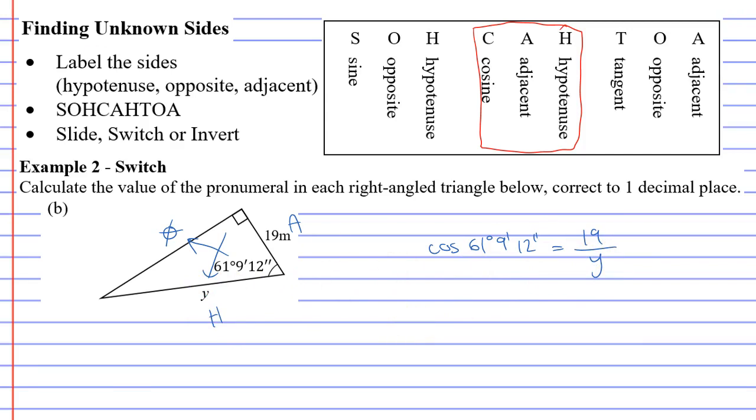Once again, if the denominator is a pronumeral, you do what's called a switch. You switch the Y with the cos 61 degrees, 9 minutes, 12 seconds. So Y comes on the left side, and our angle with the cos comes to the bottom. 61 degrees, 9 minutes, 12 seconds.